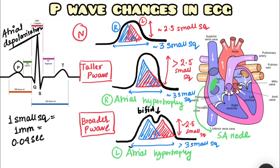Broad bifid P wave is representative of left atrial hypertrophy. Tall P wave is representative of right atrial hypertrophy.